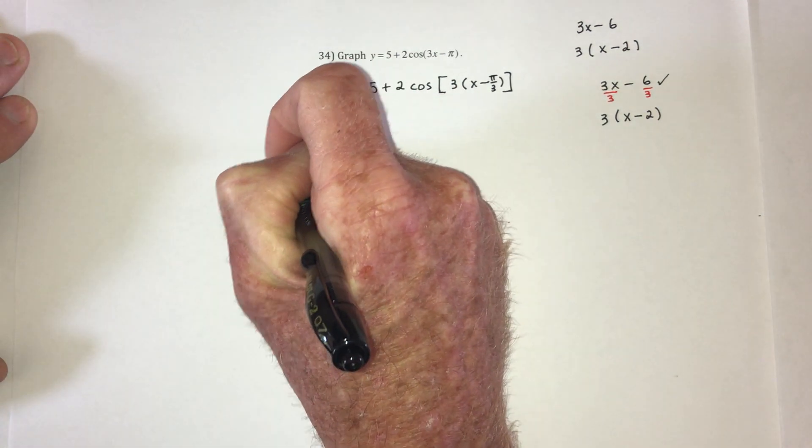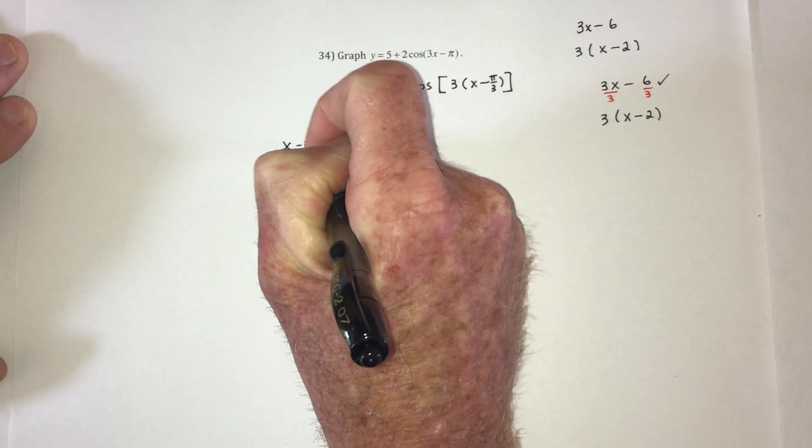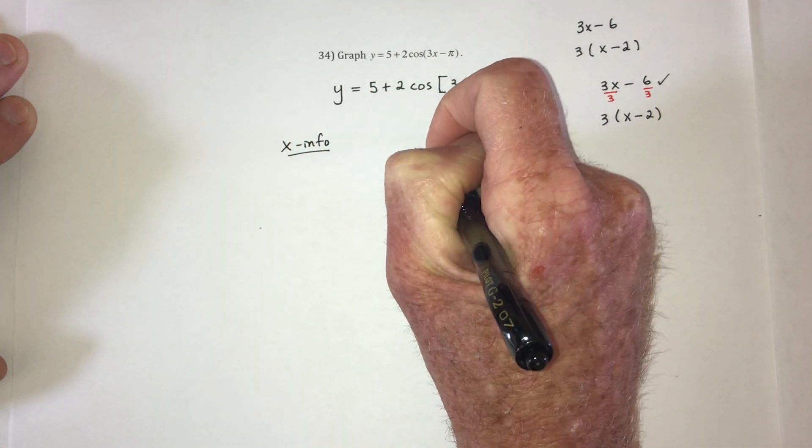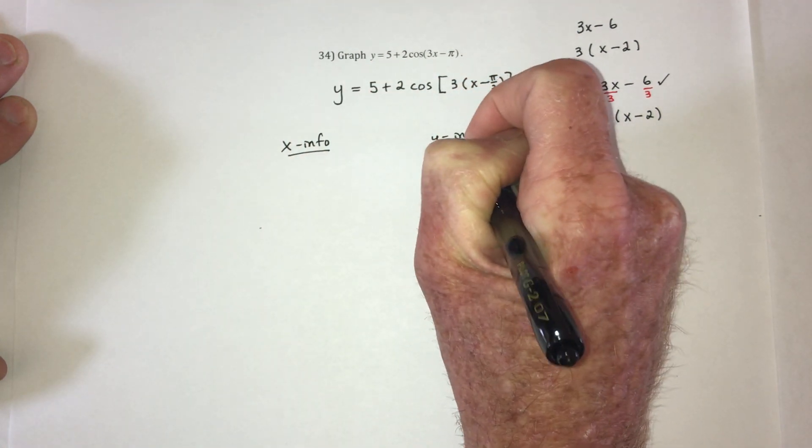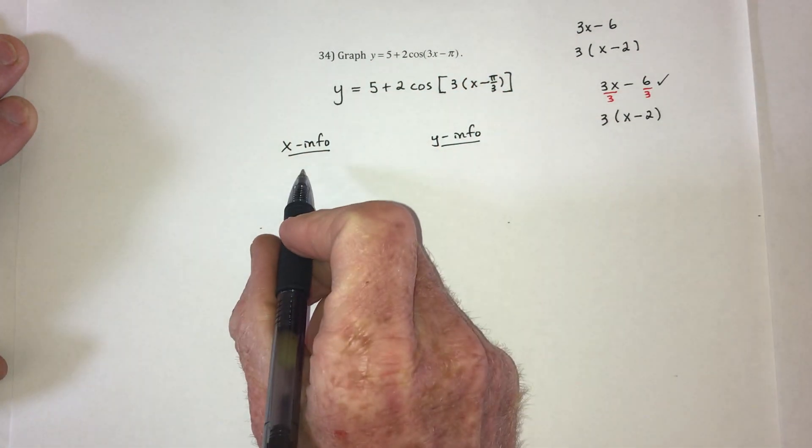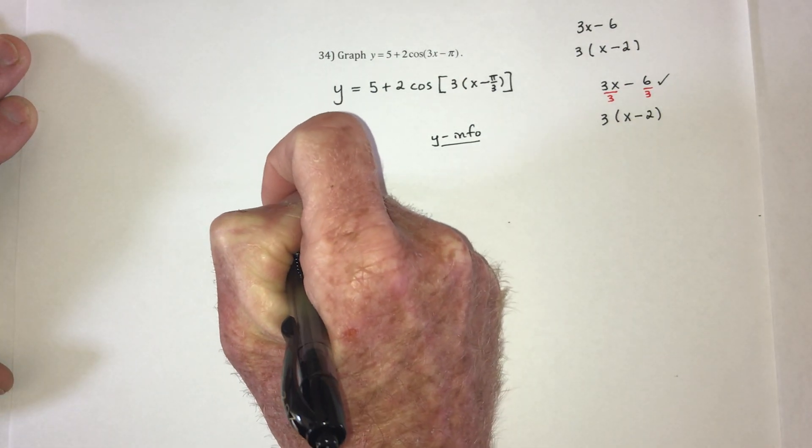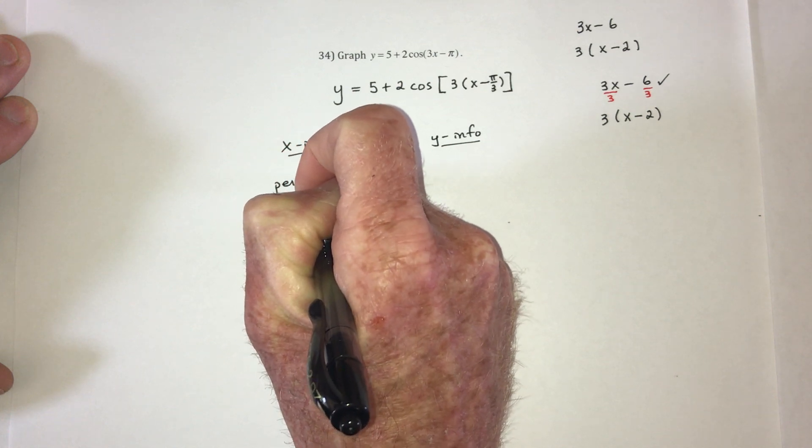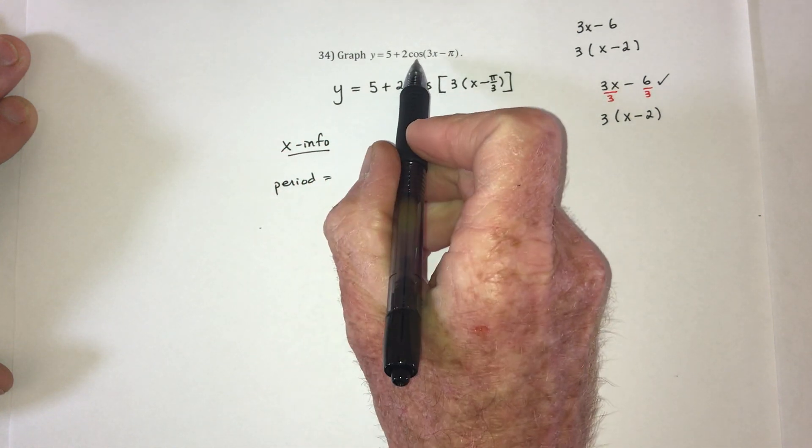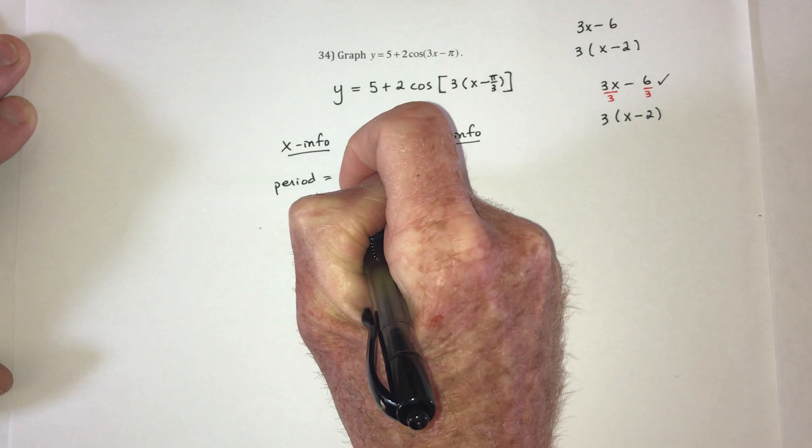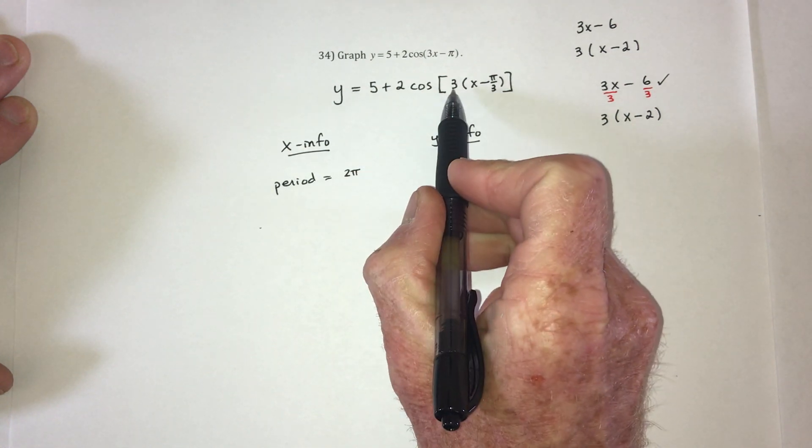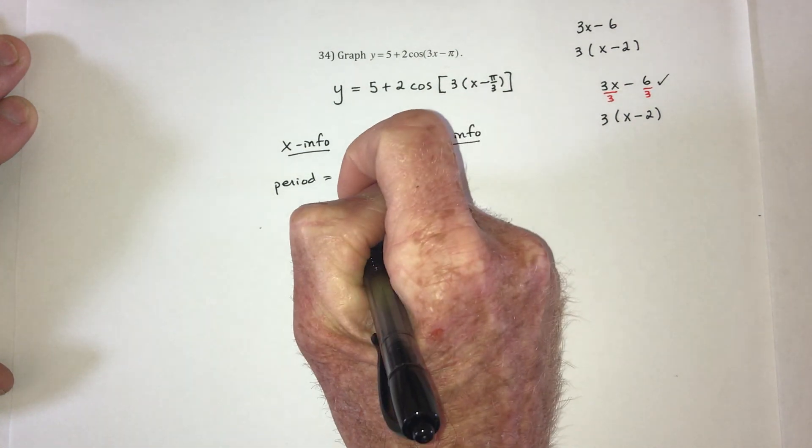The next part is write down the x information and the y information, or the x-axis and the y-axis. First of all, there's period. Now, for the graph of cosine, its period is 2 π. But because of this 3 right here, you need to divide by 3.